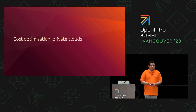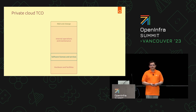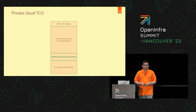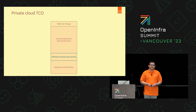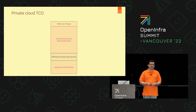When it comes to cost optimization in private clouds, a typical private cloud budget consists of four pillars: hardware and facilities costs for setting up the cloud on-prem; software licenses and services for deploying cloud software on the hardware; internal operations and maintenance — which our analysis shows is the largest portion of TCO, including data center maintenance and staff salary; and a very small portion allocated to R&D and change, which is the only positive cost as it enables organizations to explore new technologies, grow, and be more competitive.